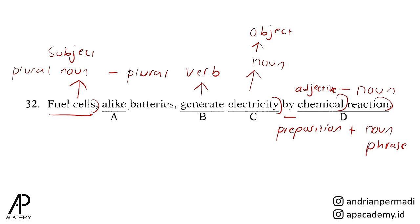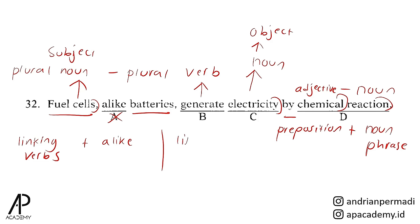Pilihan yang salah adalah A: alike. Alike hanya bisa muncul setelah linking verbs, sedangkan di sini sebelum alike tidak ada linking verbs. Yang ada adalah batteries yang muncul setelah alike. Perbedaan alike dengan like adalah: like setelahnya akan muncul noun atau noun phrase. Dalam hal ini batteries adalah noun. Oleh karena itu yang dipakai bukan alike tapi like saja.